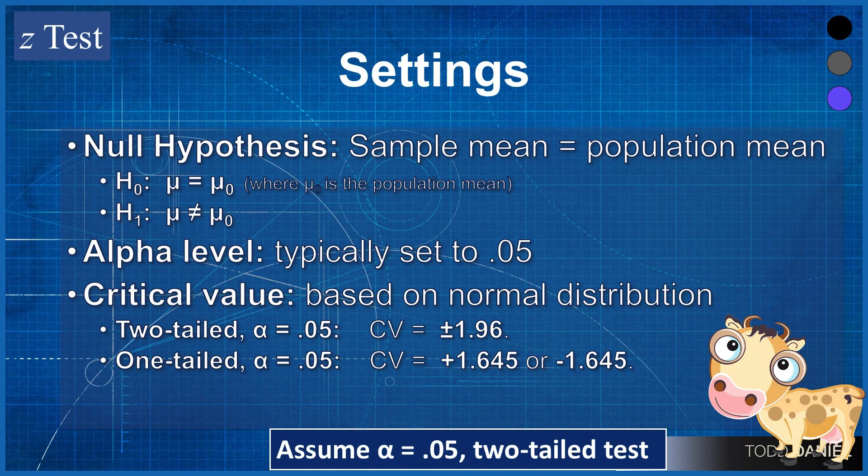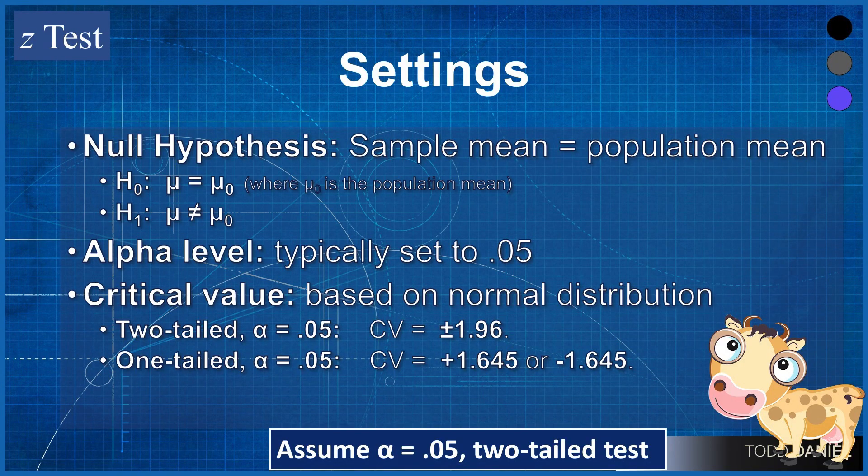The alpha level is typically .05, which for a z-test, if we're using a two-tailed test, our critical value will be 1.96, positive or negative, because there are two tails. And if we're using a one-tailed test, the critical value will be either a positive 1.645 or a negative 1.645, depending on which tail we're interested in.